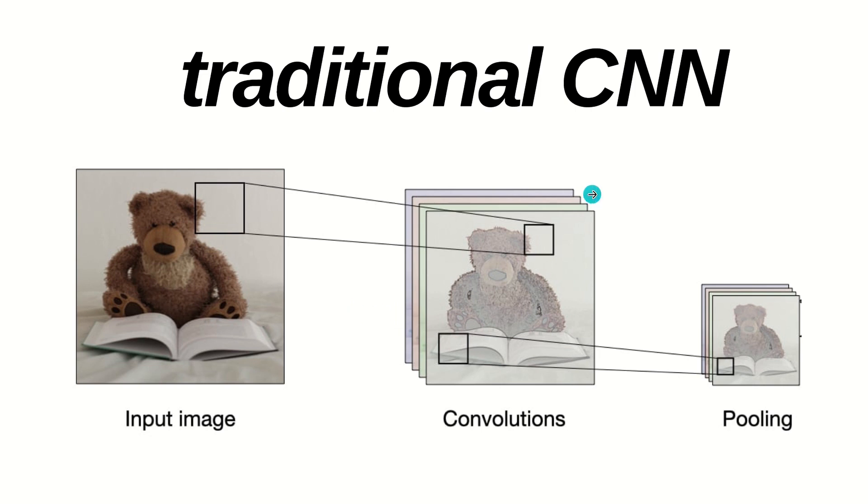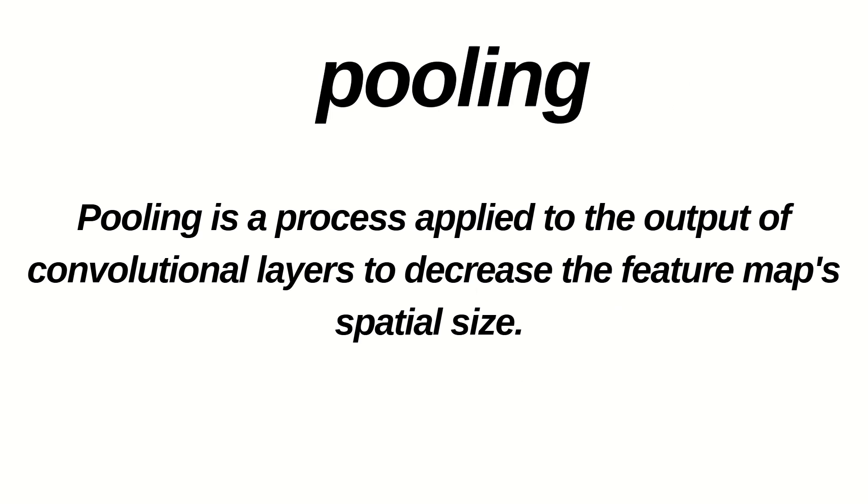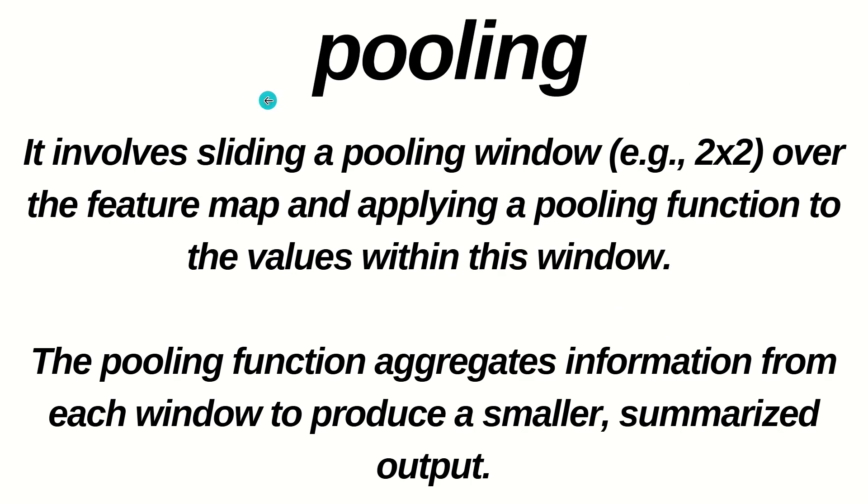Today, you can see from the image also, we have a convolutional layer, which in this case, the resultant output is a little shorter than the original one. Then the pooling layer output is again reduced in size than the previous one. It involves sliding a pooling window, it may be two by two, over the feature map and applying a pooling function to the values within this window. Examples are max pooling, average pooling and so on. The pooling function aggregates information from each window to produce a smaller summarized output. We will be having one box available, let's suppose two by two size, it will slide down over the feature map and keep on aggregating the data in that particular region. This is what is called pooling.